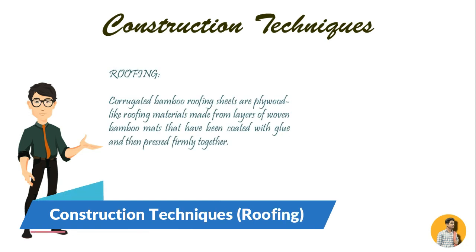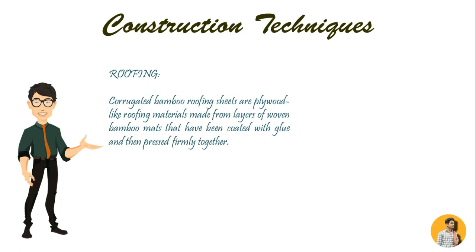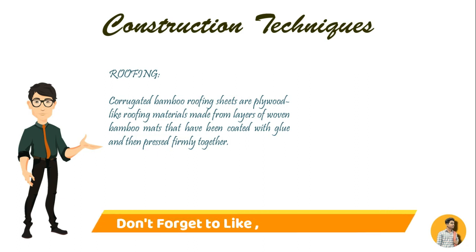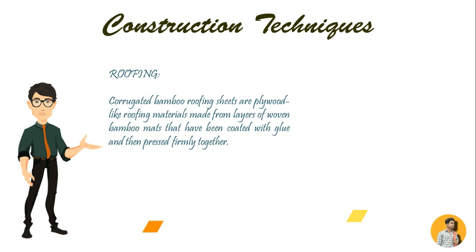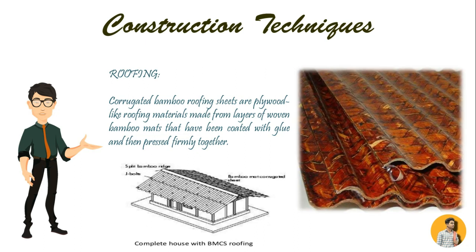Now let's talk about roofing. Corrugated bamboo roofing sheets are plywood-like roofing materials made from layers of woven bamboo mats that have been coated with glue and then pressed firmly together. These are an excellent alternative to iron, zinc or plastic roofing sheets. They are durable and have high resistance to adverse weather conditions, and these sheets can be produced in a variety of sizes and used as a roof for a wide range of buildings.